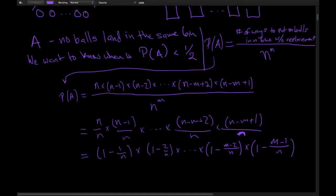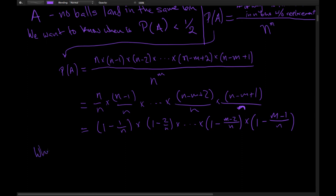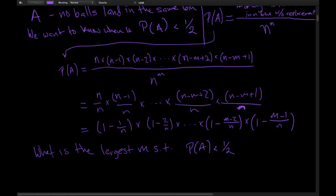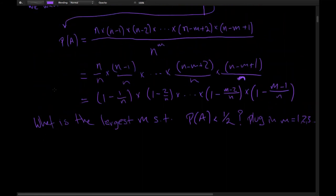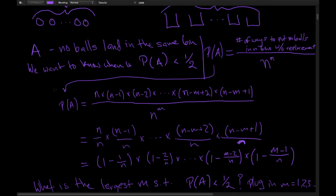We want to find the largest M such that P(A) < 1/2 — that is, the maximum number of keys we can store before the probability that no two balls land in the same bin drops below 1/2. We could plug in M = 1, 2, 3, and so on, but instead we want a closed-form inequality that we can evaluate directly.